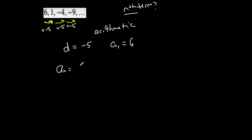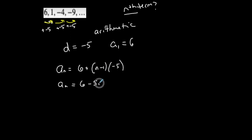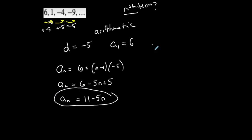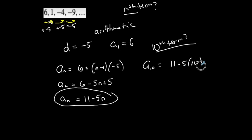So if I want the nth term: a1 plus n minus 1 times d, which is negative 5. Simplify: 6 plus distribute negative 5 gives minus 5n plus 5. So aN, the nth term, is 11 minus 5n. If I want the 10th term, I plug in 10 for n: 11 minus 50. Therefore a10 equals negative 39.